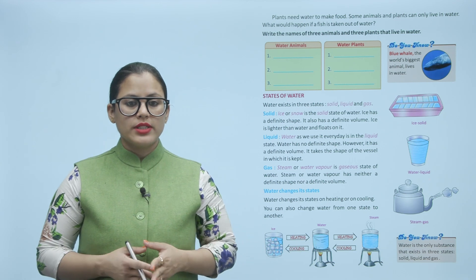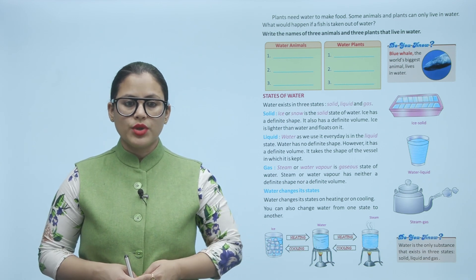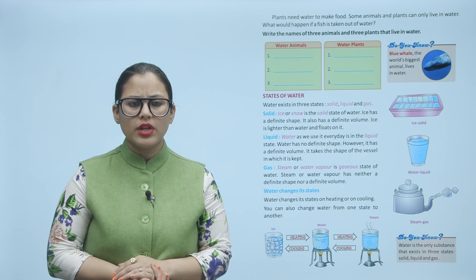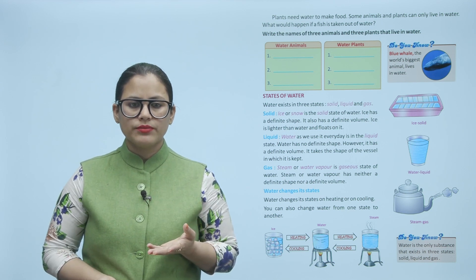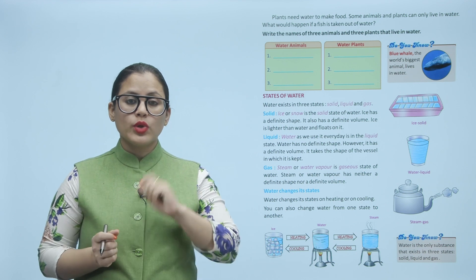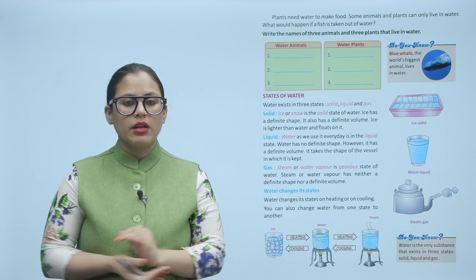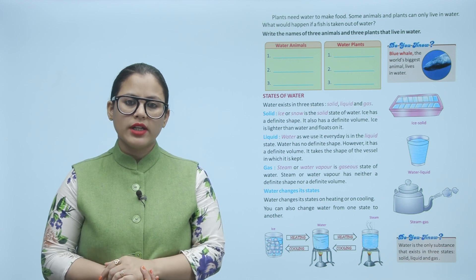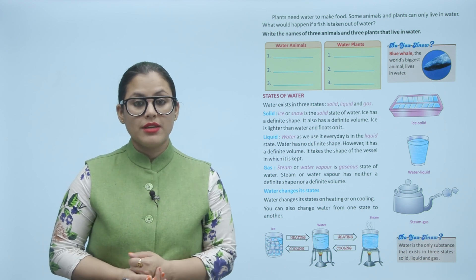Plants need water to make food. Some animals and plants can only live in water. What would happen if a fish is taken out of water? Plants need food, but first they need water. Then they will make food. Some animals and plants live only in water. If you take a fish out, you know what will happen.